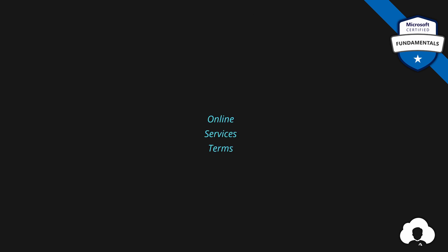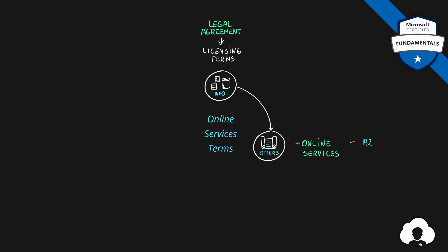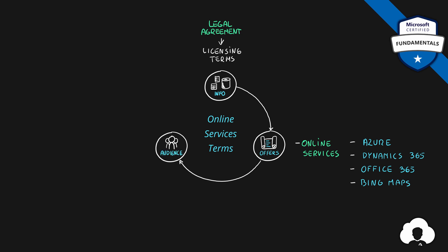The next document is called Online Services Terms. This document provides the following information: it describes the legal agreement — so-called licensing terms, previously also called usage rights. This legal agreement describes those usage rights in the context of Microsoft online services, such as Azure, Dynamics 365, Office 365, any other offering from the Microsoft 365 platform, or something like Bing Maps. Those licensing terms explain to you as a customer what you are allowed and what you are disallowed to do when using those online services. Because this is a legal document, it is designed for your organizational legal teams to review and verify that your applications and services follow those legal agreements.